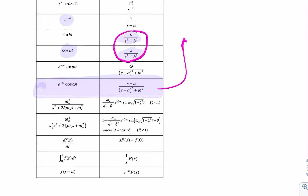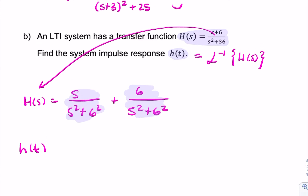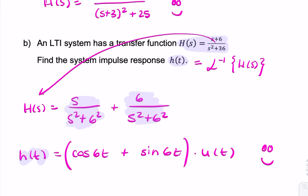We've seen something that looks like each of those in the table. S over S squared plus something squared corresponds to cosine, and a number over S squared plus a number squared corresponds to sine. So we can write h of T equals cosine 6T plus sine 6T, because linearity gives us the plus. That would be your final answer, but to express the fact that T has to be positive, you multiply by a unit step. So that is our impulse response — we've carried out an inverse Laplace transform using the table with a little bit of manipulation.